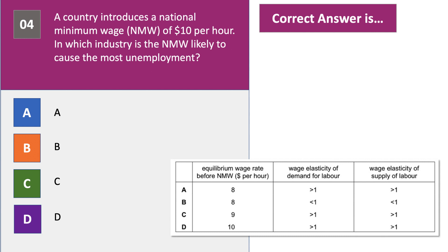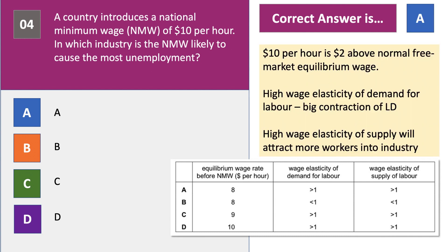The right answer is A, for three reasons. First, it's the industry where the minimum wage will be highest relative to beforehand. In industries A and B, it'll be a $2 per hour increase — a significant pay floor. Secondly, in industry A the wage elasticity of demand for labour is greater than one, in other words it's wage elastic, so you'd expect a big contraction in employment. And the wage elasticity of supply is also greater than one, so you'd attract more workers into the industry. In industry A, you'd be more likely to get a big excess supply of labour — hence the most unemployment.